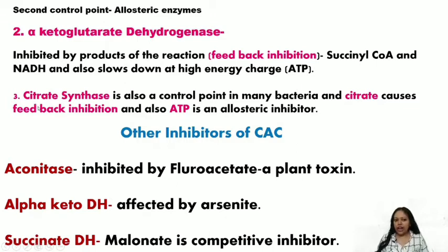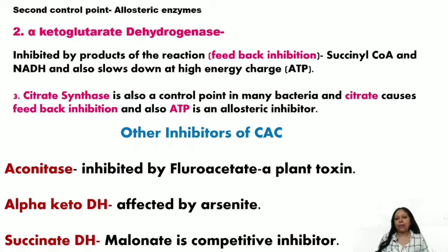The third control point is citrate synthase, which catalyzes the first reaction of the citric acid cycle. In many bacteria (though not in mammals), it is also a control point, inhibited by feedback inhibition by its product citrate and by ATP as an allosteric inhibitor. That covers all three allosteric enzymes of the citric acid cycle.